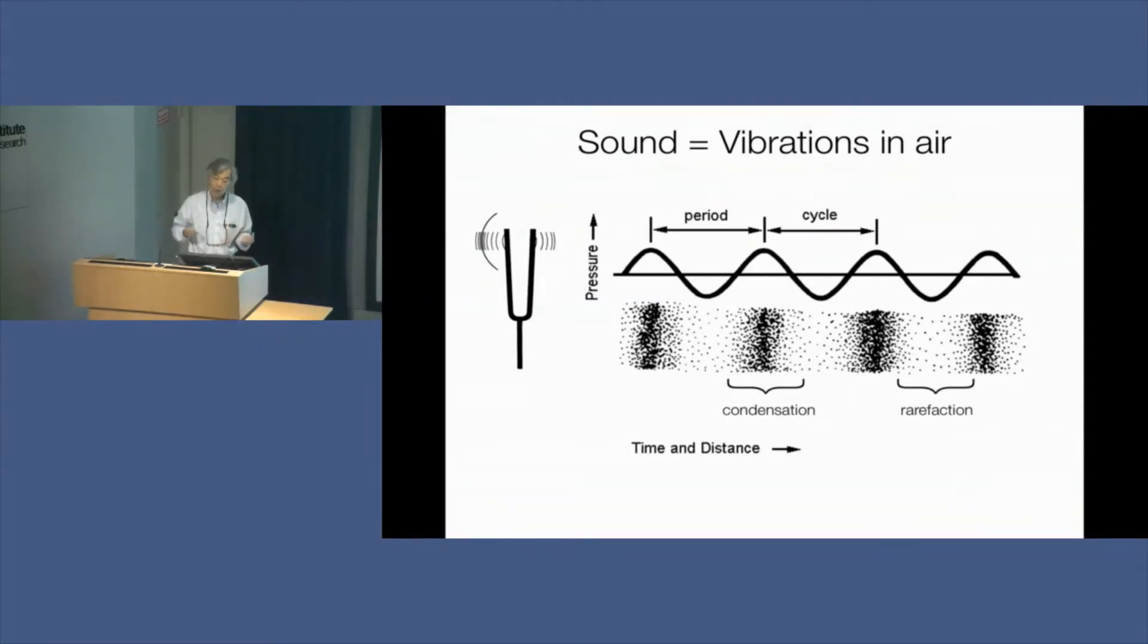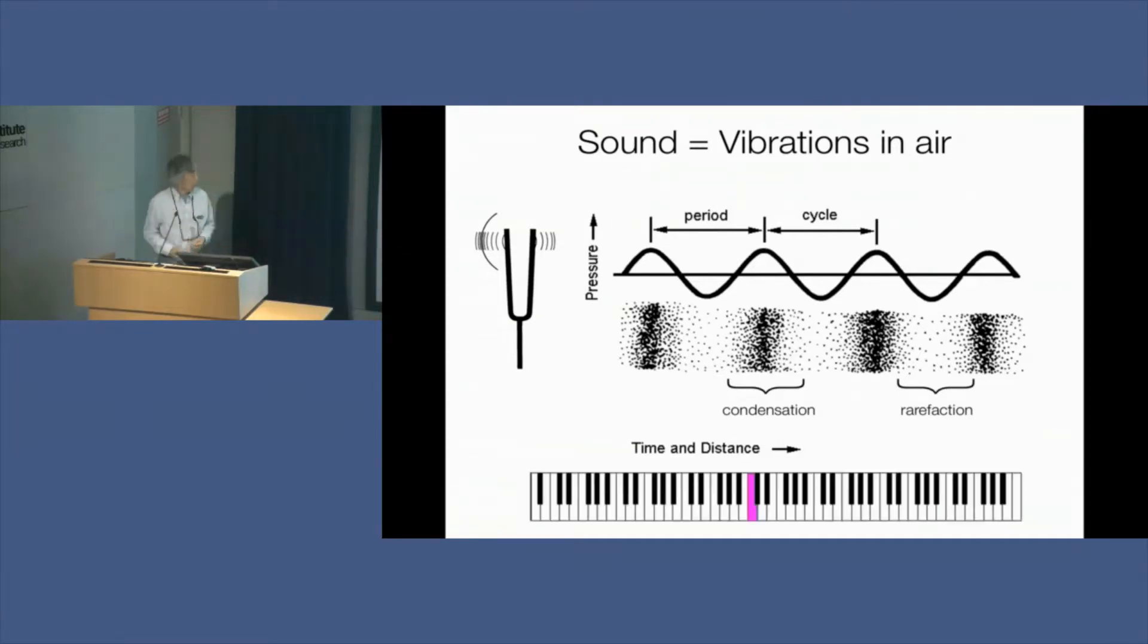On the bottom is a diagram of a piano keyboard. The C note is middle C, which is 256 cycles per second. The highest note on the piano is 4,186 cycles per second.